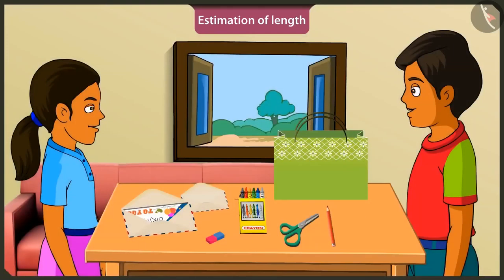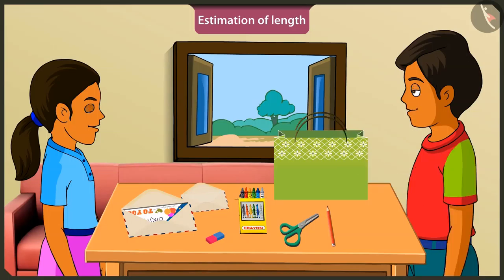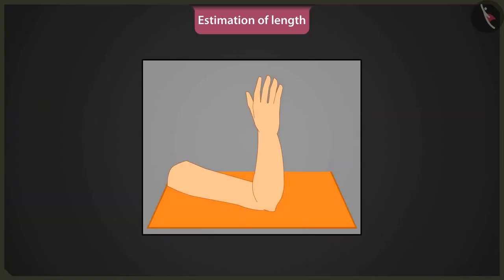Mintu, now I will teach you how to measure by making your arm length a unit. Yes, fine. Look, the distance from the elbow to the tip of the middle finger is called the length of the arm or the length of a cubit.